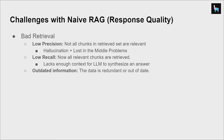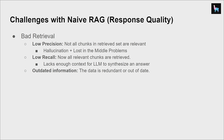This includes issues like low precision — not all chunks in the retrieved set are relevant — which leads to hallucination and loss-in-the-middle problems, where you have a lot of fluff in the returned response. This could mean low recall where your top-K isn't high enough, or the information needed to answer the question just isn't there. There's also outdated information, hallucination, irrelevance, toxicity bias — a lot of issues on the LLM side as well.